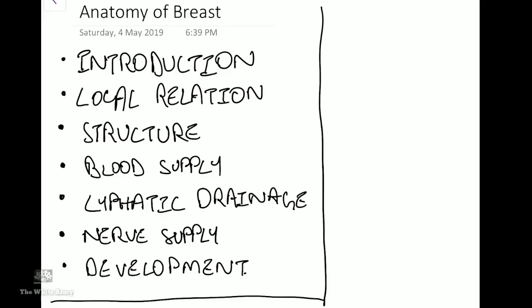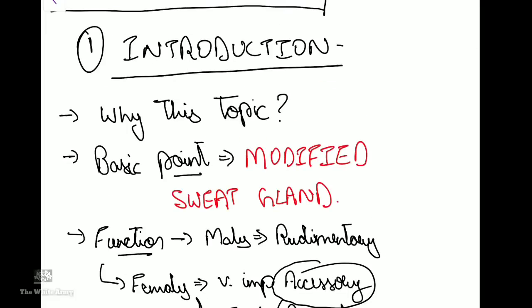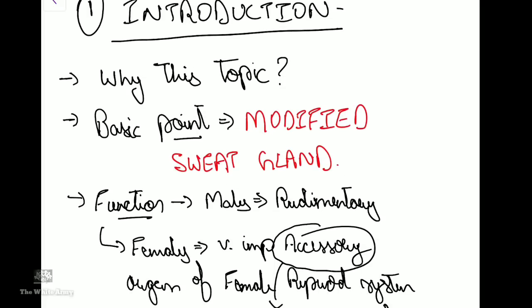Hello everybody, this is Ashrai here. Today I'm going to be dealing with the topic of anatomy of the breast, covering introduction, local relations, structure, blood supply, lymphatic drainage, nerve supply, and development of the breast. The most basic point to start with is that the breast is nothing but a modified sweat gland. In males it is a rudimentary organ, and in females it serves as a very important accessory organ of the female reproductive system.